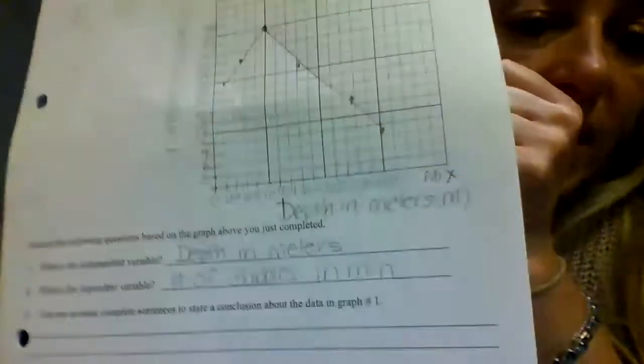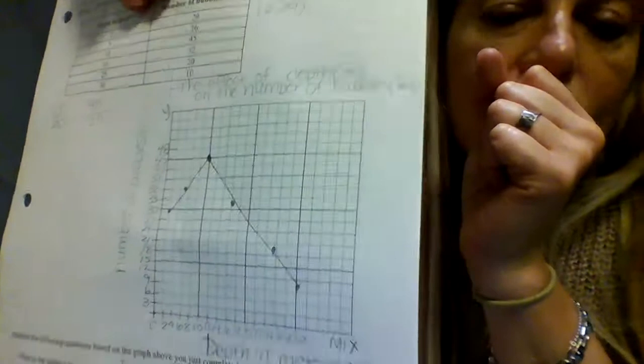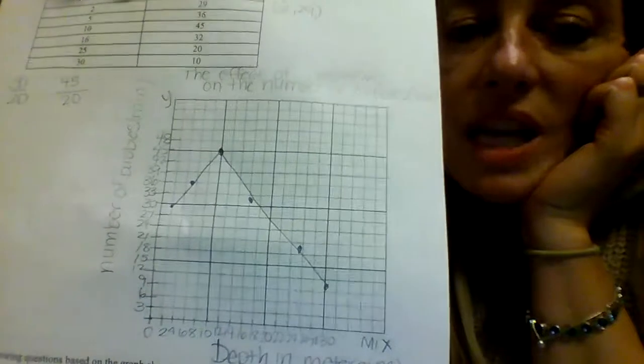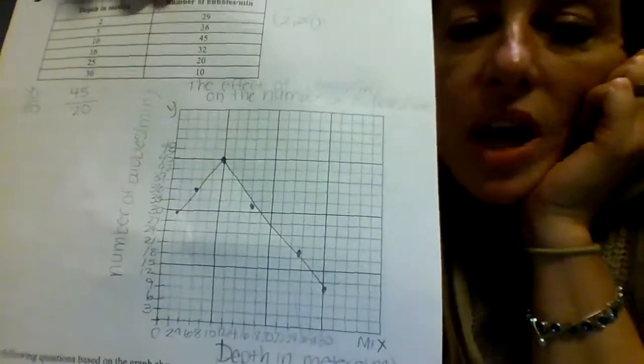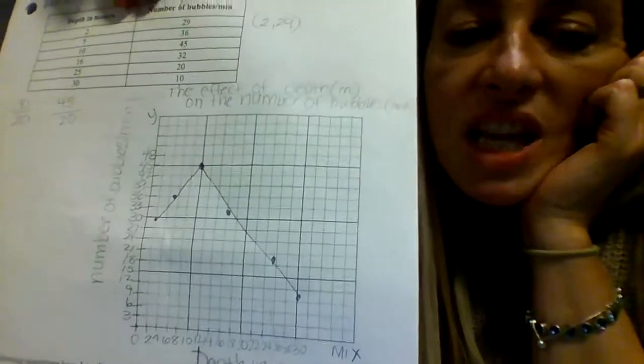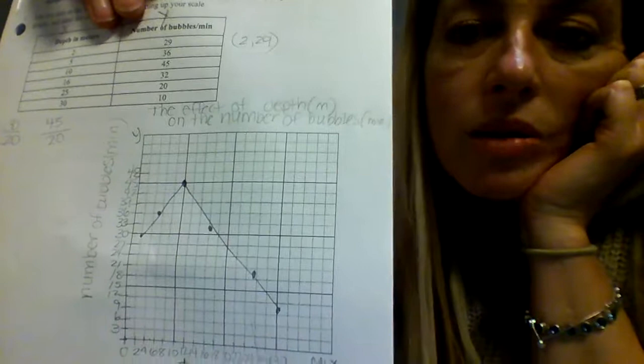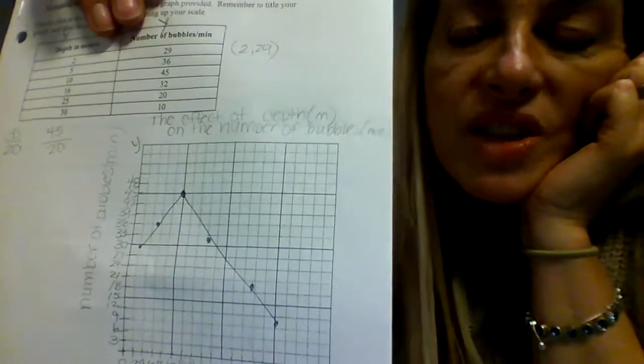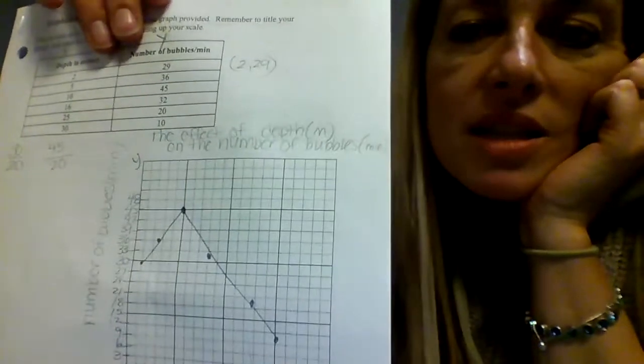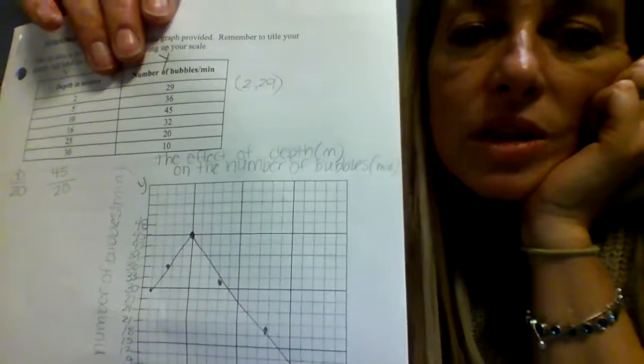There's one more question at the bottom. Don't forget it. It says make a conclusion about the graph. So you're allowed to write anything you want. Draw one conclusion. You're making an inference. So what happened at 10 feet? All of a sudden it started to do what? Decrease. So it increased. The number of bubbles increased to 10 feet. But at 10 feet mark, as soon as we started getting lower and lower and lower into the ground, lower under the water, what happened to the bubbles? Then they started to decrease. So 10 meters was the best depth. Anything greater than 10 meters is not so good. You have to write your own conclusion.